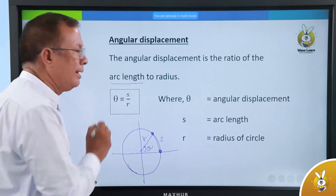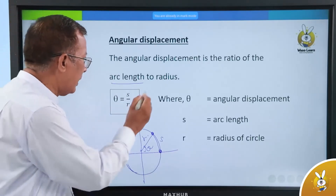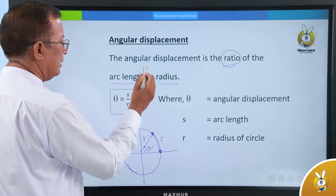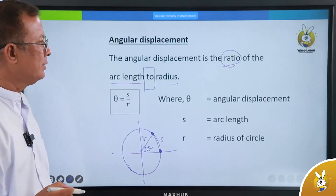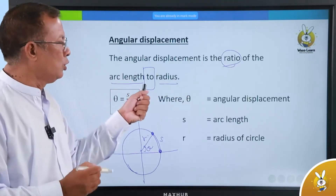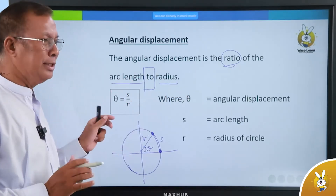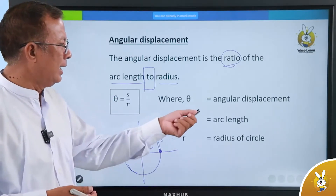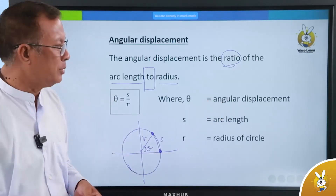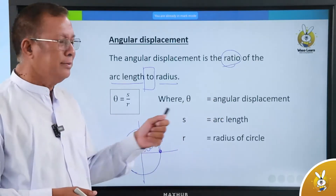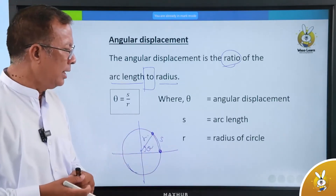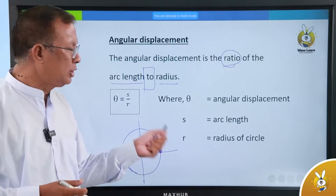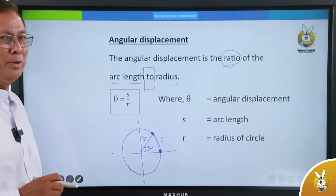S by R: arc length divided by radius. S by R length. Arc length by radius — this is the S by R equation.